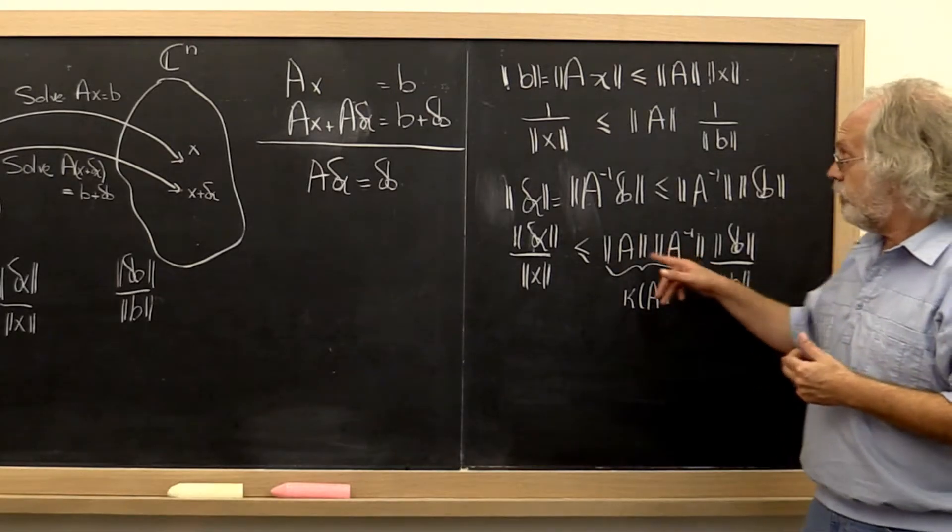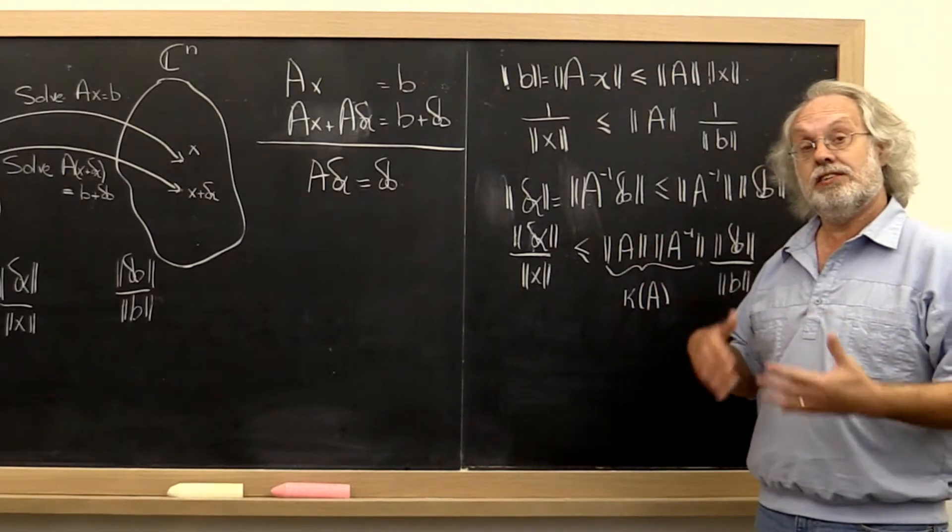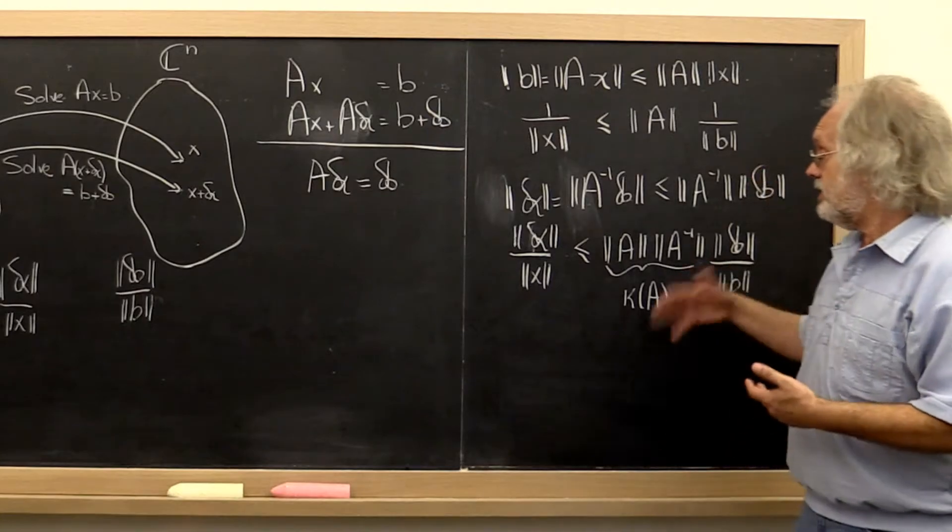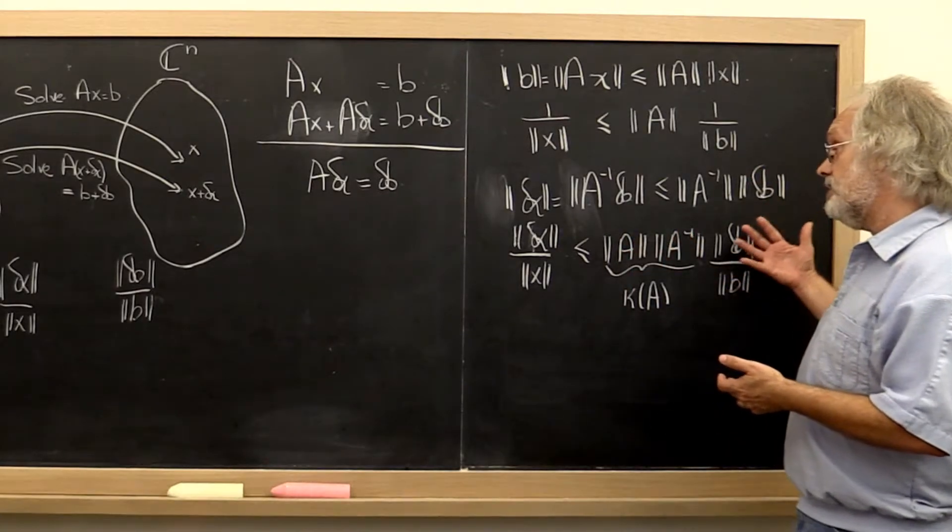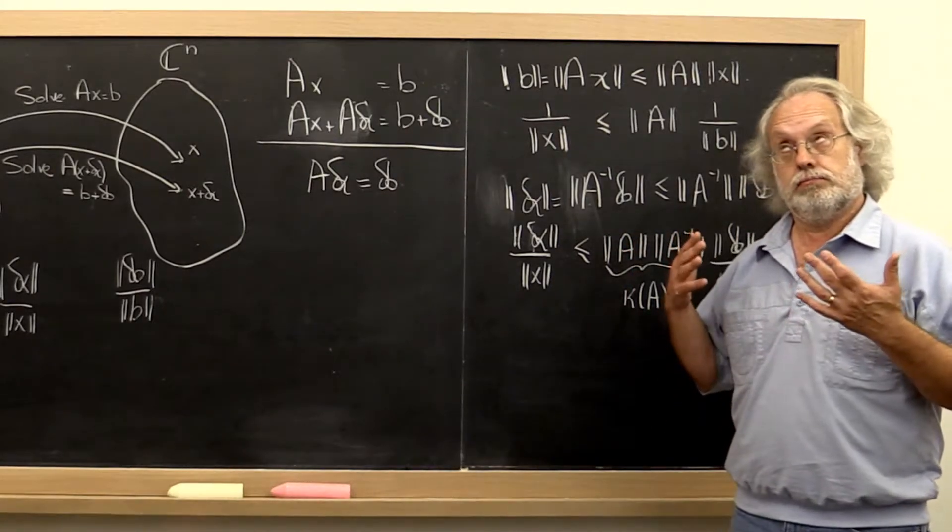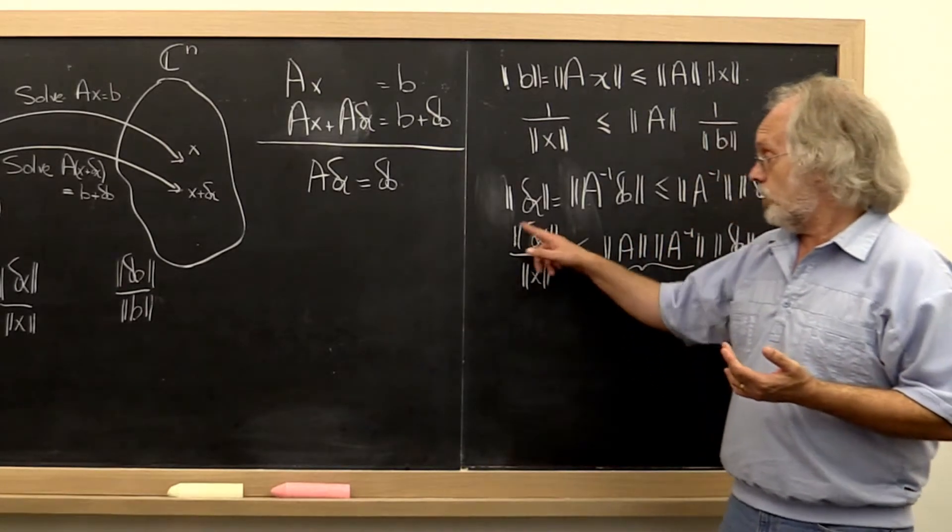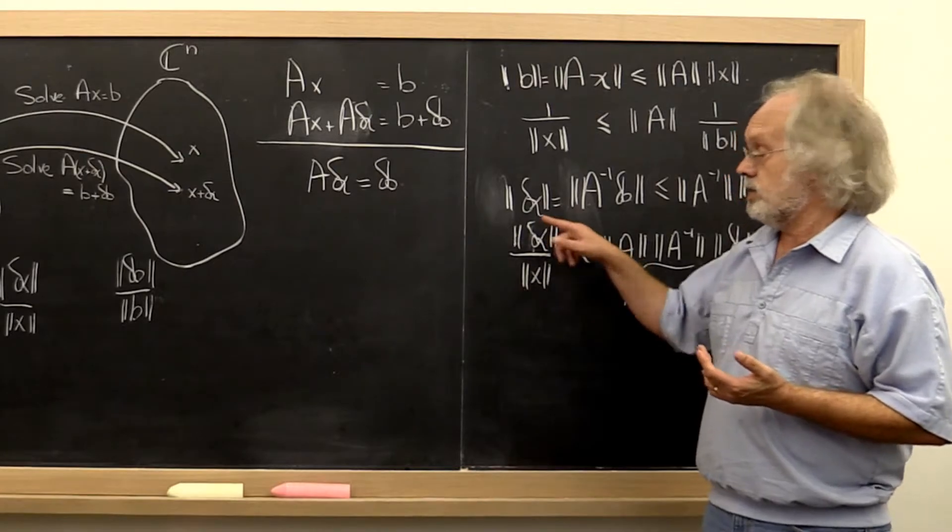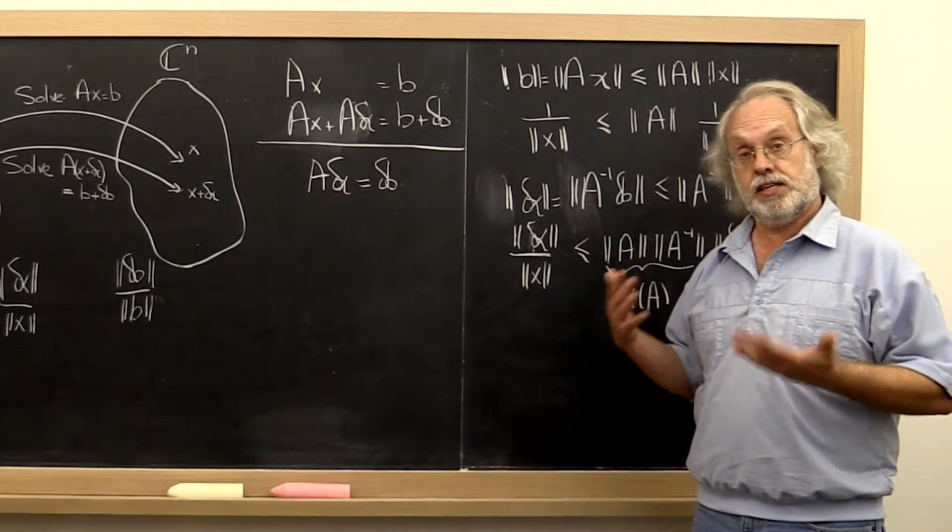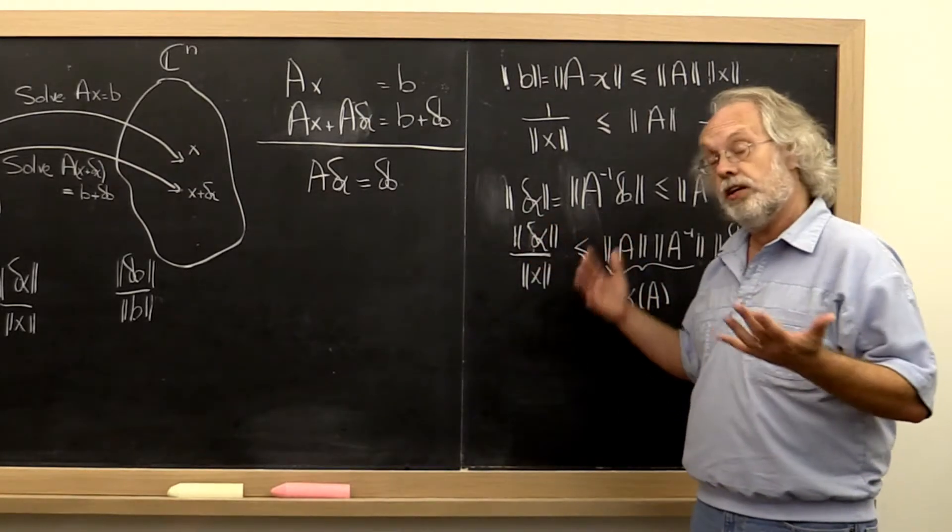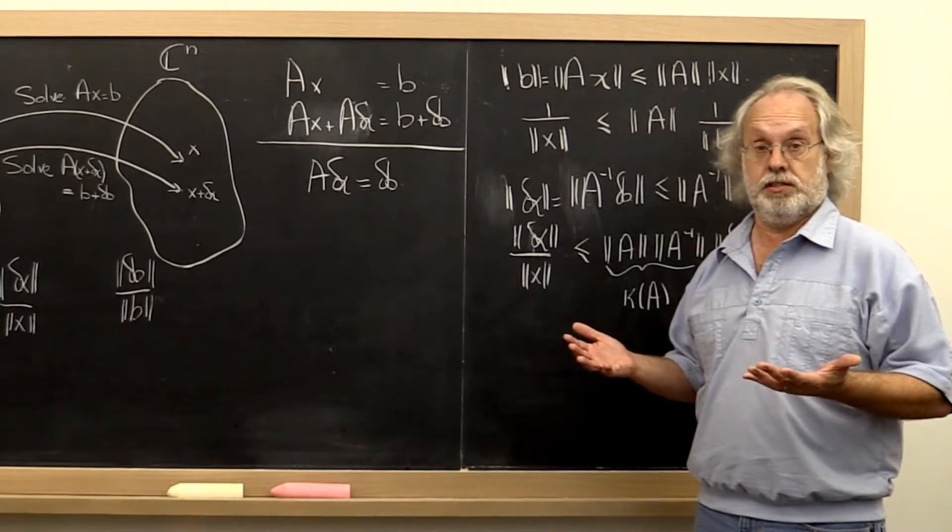Now, if your condition number is 10 to the sixth, then 10 to the sixth times 10 to the minus eighth is 10 to the minus second. So the relative error here is 10 to the minus second, and you only have roughly two digits of accuracy in your results.